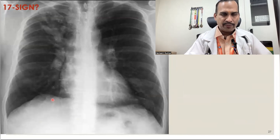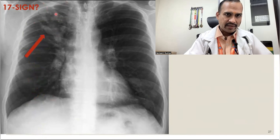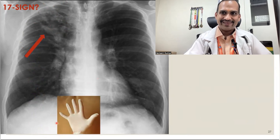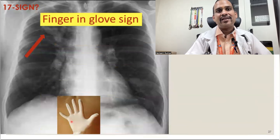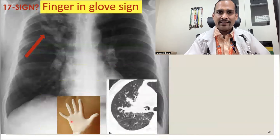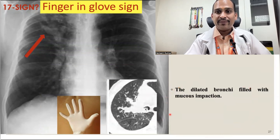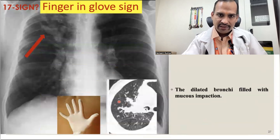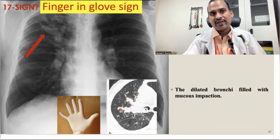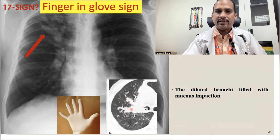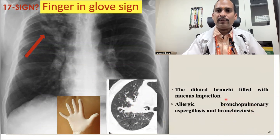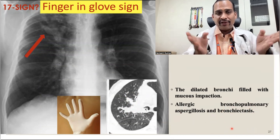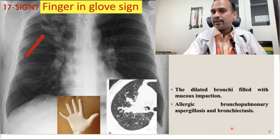Sign 17 is the finger-in-glove sign. You can see opacities in the right upper lobe resembling fingers in a glove. This is dilated bronchi filled with mucus. On CT scan, you can beautifully appreciate this. It is seen in ABPA — allergic bronchopulmonary aspergillosis — and in bronchiectasis. Whenever there is dilatation of airways filled with mucus, it produces the finger-in-glove sign.